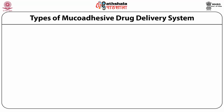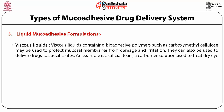Liquid mucoadhesive formulations can be understood under two types: viscous liquids and gel-forming liquids. Viscous liquids containing bioadhesive polymers such as carboxymethyl cellulose may be used to protect mucosal membranes from damage and irritation, and also to deliver drugs to specific sites. A typical example of viscous liquids is artificial tears, which is a carbomer solution usually used to treat dry eye syndrome.